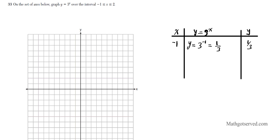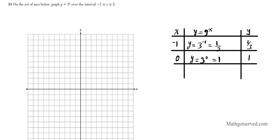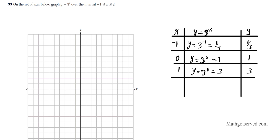For x equals 0: y equals 3 to the 0, and anything raised to the zero power is 1, so our output is 1. For x equals 1: y equals 3 to the first power, which is 3. For x equals 2: y equals 3 squared, which is 3 times 3 equals 9. So let's go ahead and graph it.